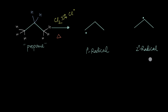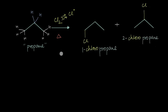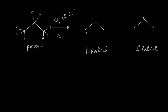These carbon radicals — both first-degree and second-degree — are unstable and very reactive. They then react with undissociated chlorine molecules present in the mixture, ultimately leading to the formation of our products: 1-chloropropane and 2-chloropropane. These radicals are therefore the precursors to my products.